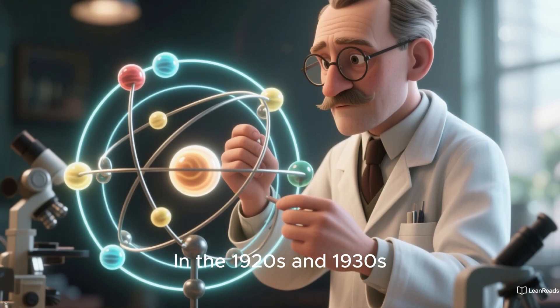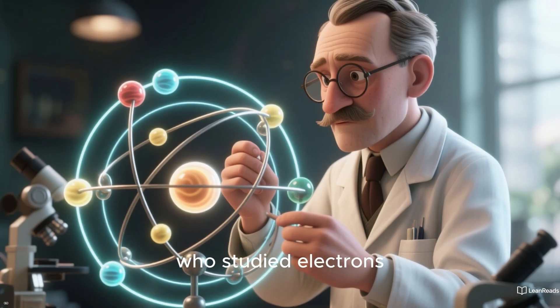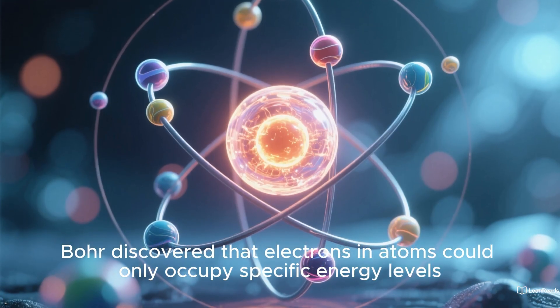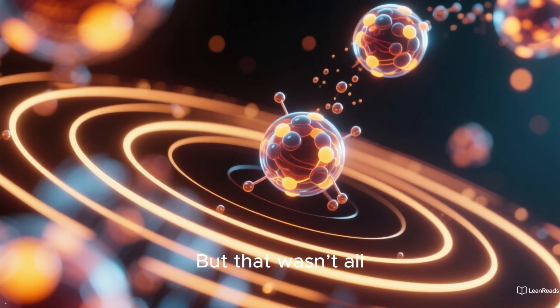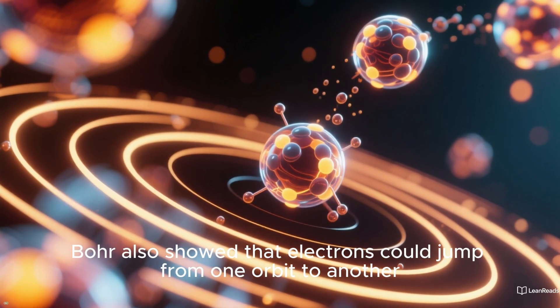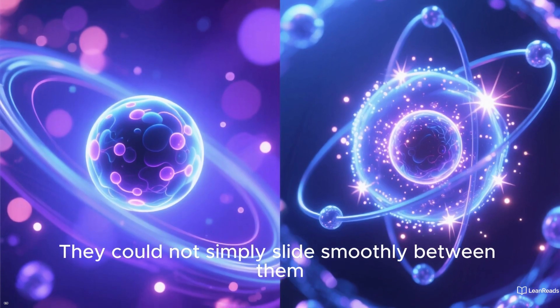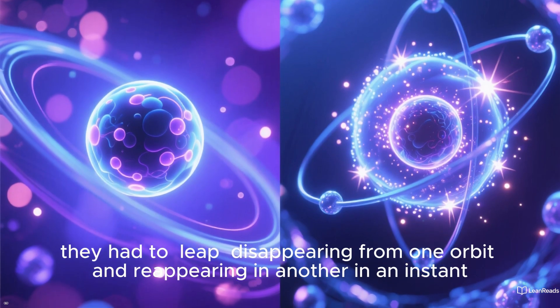In the 1920s and 1930s, further surprises came from Danish physicist Niels Bohr, who studied electrons. Bohr discovered that electrons in atoms could only occupy specific energy levels, and these levels defined the orbits of electrons around the nucleus. But that wasn't all. Bohr also showed that electrons could jump from one orbit to another. They could not simply slide smoothly between them. Instead, they had to leap, disappearing from one orbit and reappearing in another in an instant. This phenomenon became famously known as the quantum leap.